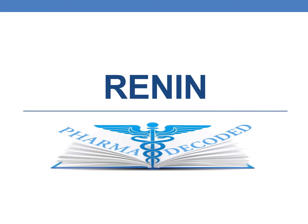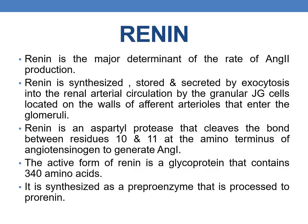Hello everyone. Now let us discuss about renin. Renin is the major determinant of rate of angiotensin 2 production, and renin is synthesized, stored and secreted by exocytosis into the renal arterial circulation by granular extraglomerular cells — JG cells — located on the walls of afferent arterioles that enter the glomerulus.